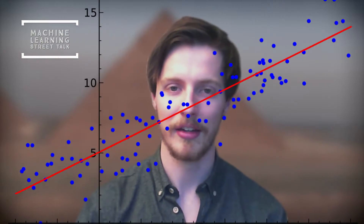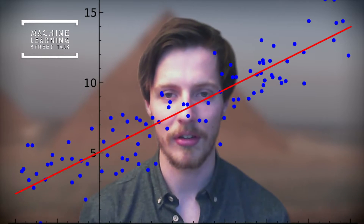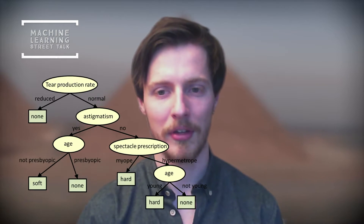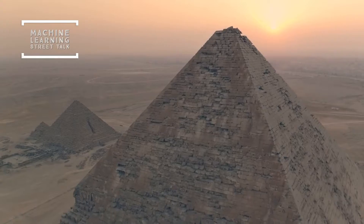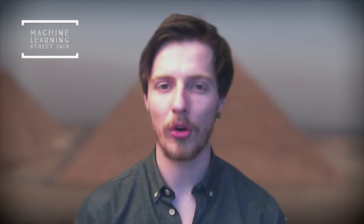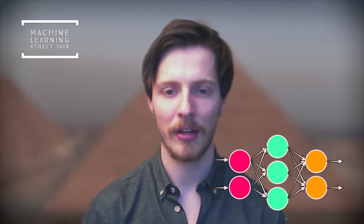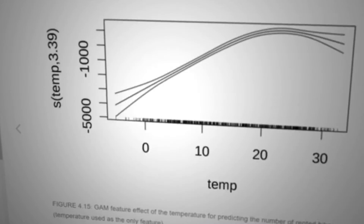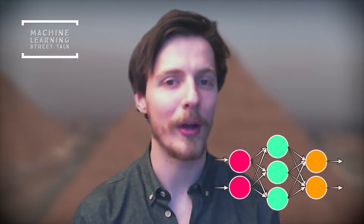For hundreds of years, we've had simple interpretable models like linear regression and rules-based systems. But in recent years there's obviously been a huge rise in more complex, bigger, non-linear models, and predictions from these models are not always so easy to explain.